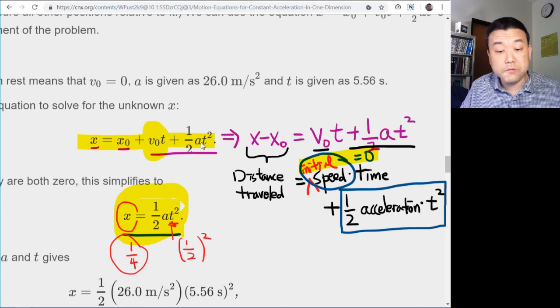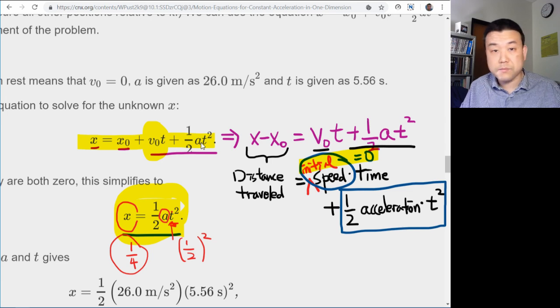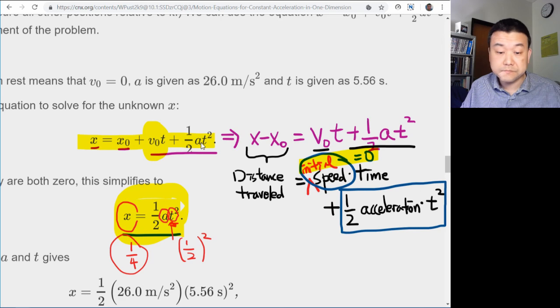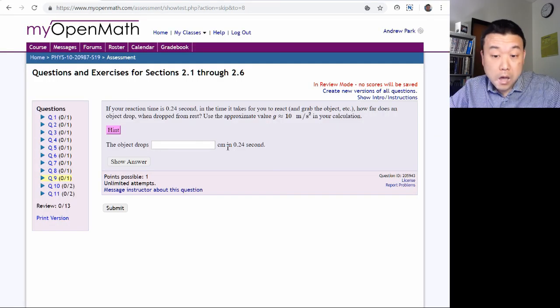And for the purpose of the question, really all you have to do is plug in the numbers. The acceleration is the gravitational acceleration, 10 meter per second squared. And you are given the time in seconds. Plug those in, you get the answer in meters. Oh, so I guess that means you have to convert your meter answer into centimeter.